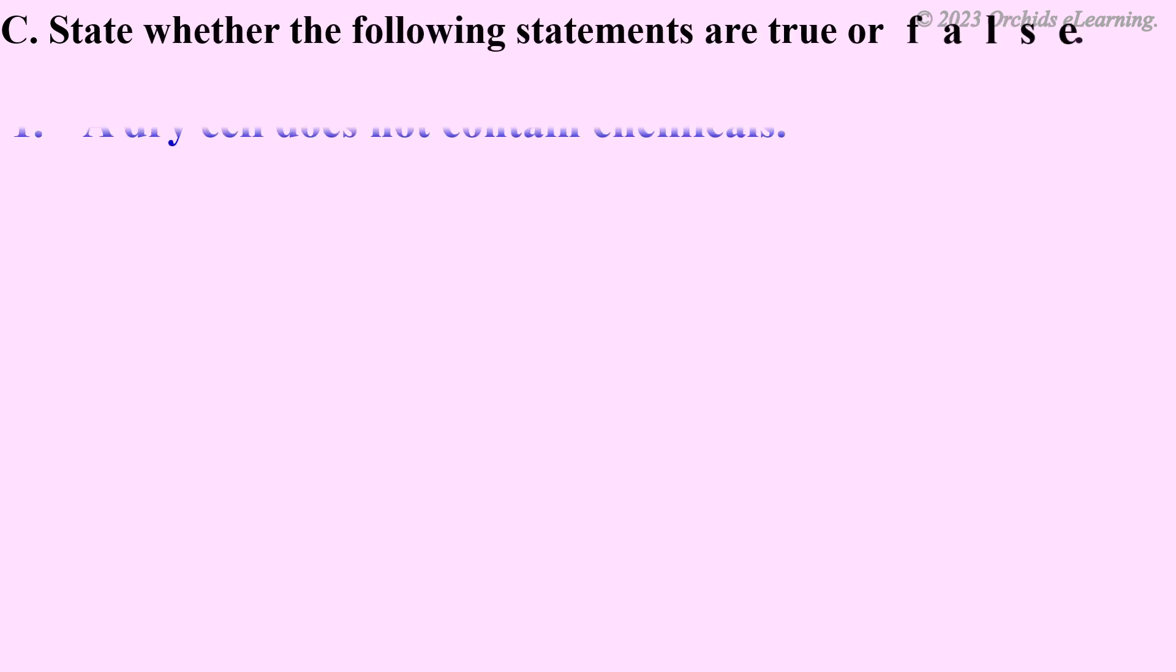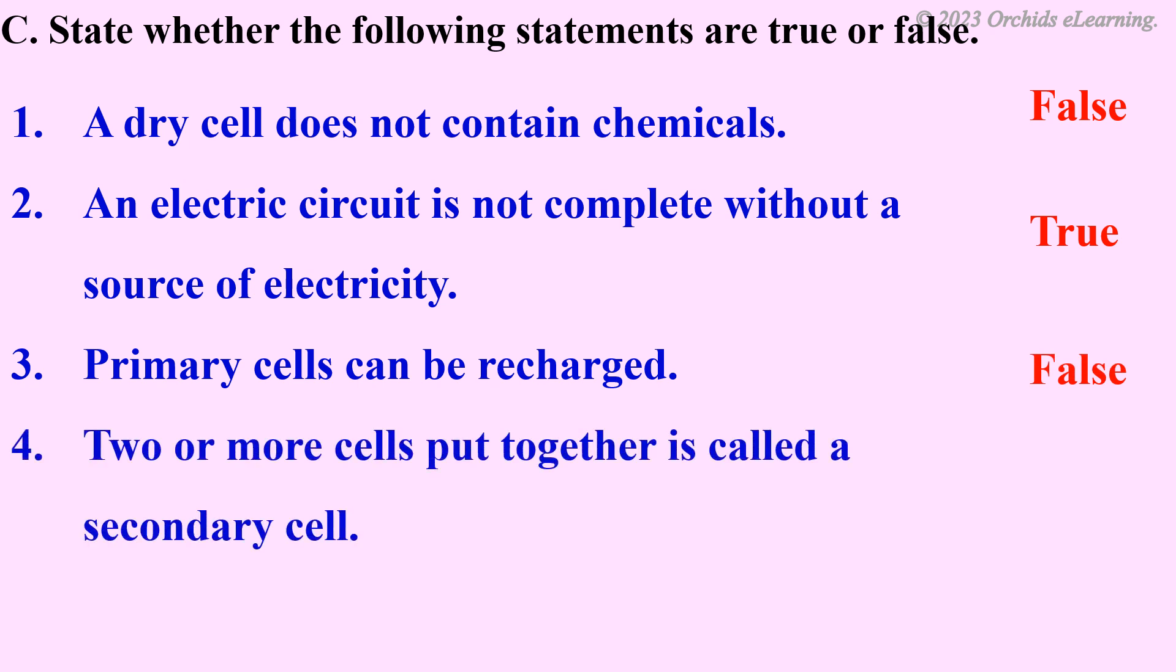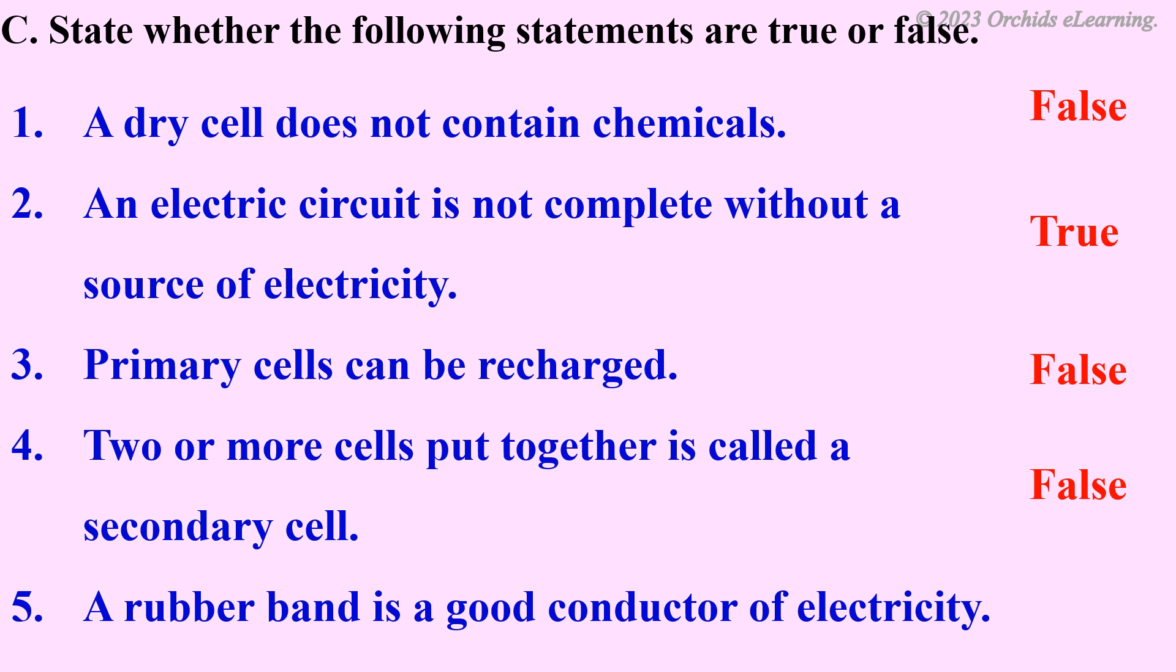State whether the following statements are true or false. A dry cell does not contain chemicals - false. An electric circuit is not complete without a source of electricity - true. Primary cells can be recharged - false. Two or more cells put together is called a secondary cell - false. A rubber band is a good conductor of electricity - false.